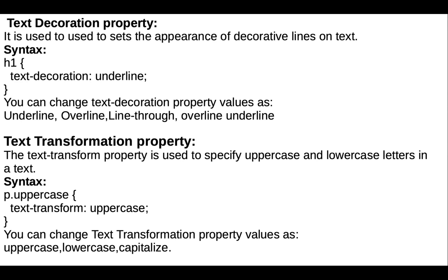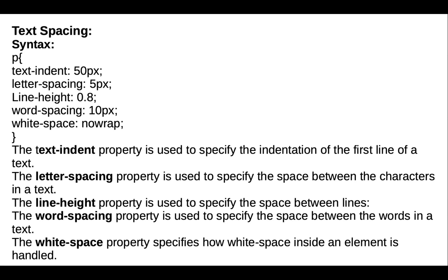The text-transform property is used to specify uppercase and lowercase letters in a text — values are uppercase, lowercase, and capitalize. For text spacing, we can change text-indent, letter-spacing, line-height, word-spacing, and white-space. Text-indent indents the first line of text. Letter-spacing specifies space between characters. Line-height specifies space between lines. Word-spacing specifies space between words. White-space specifies how white space inside an element is handled.